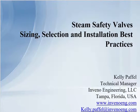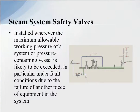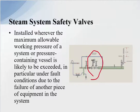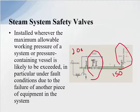Today I want to talk about steam safety valves: sizing, selection, installation, and best practices. Steam safety valves are installed wherever the maximum allowable working steam pressure of a system, or over-pressurizing a containing vessel, is likely to be exceeded — in particular under fault conditions due to the failure of another piece of equipment in the system. In a typical system, if we have a pressure reducing valve with 200 PSI upstream and our equipment downstream is only rated for 150 PSI, we need to protect it with a safety relief valve. That safety relief valve will typically be set for the lowest rated equipment or component in the system by pressure and temperature rating.